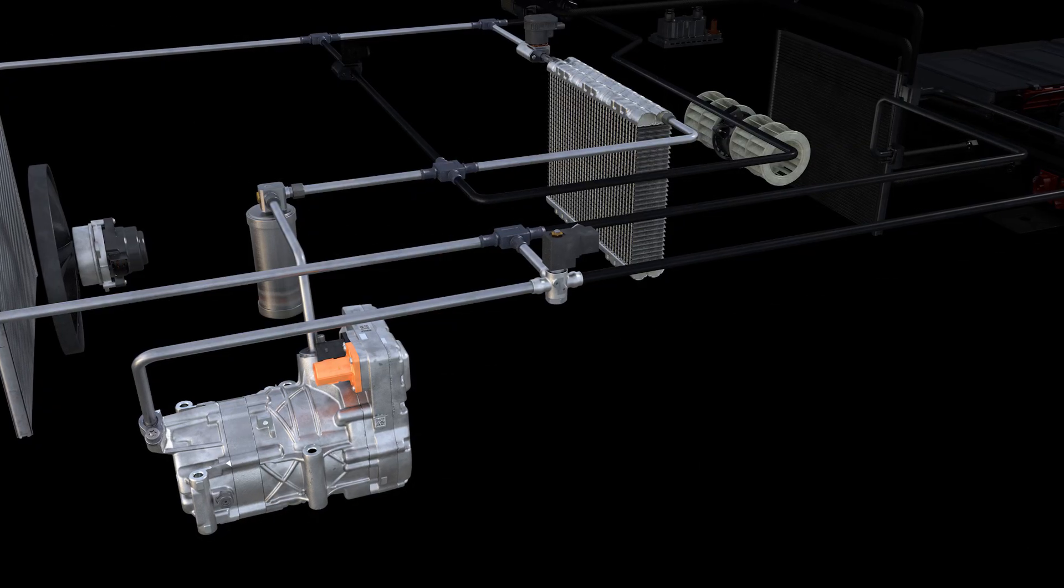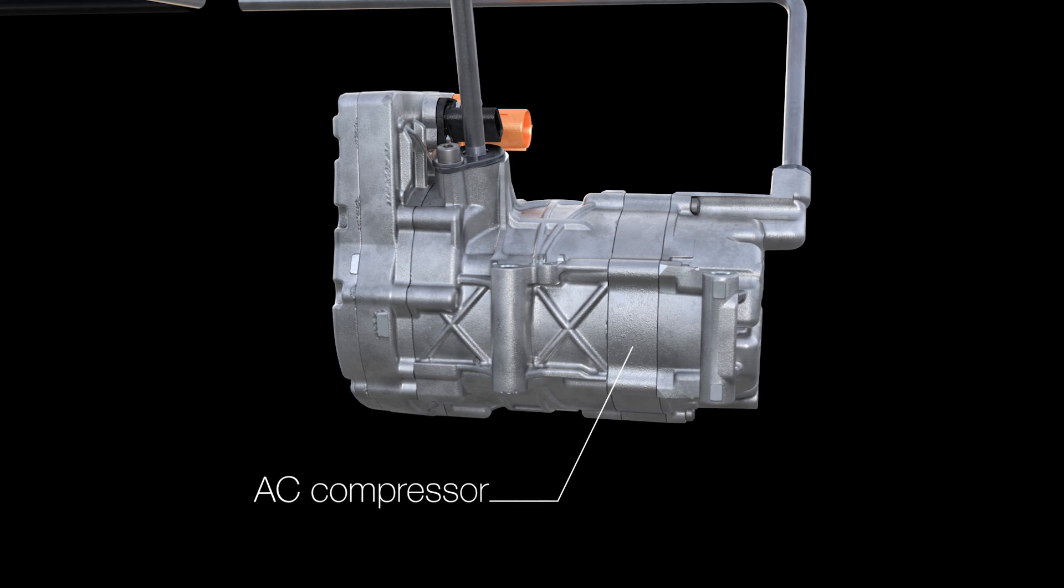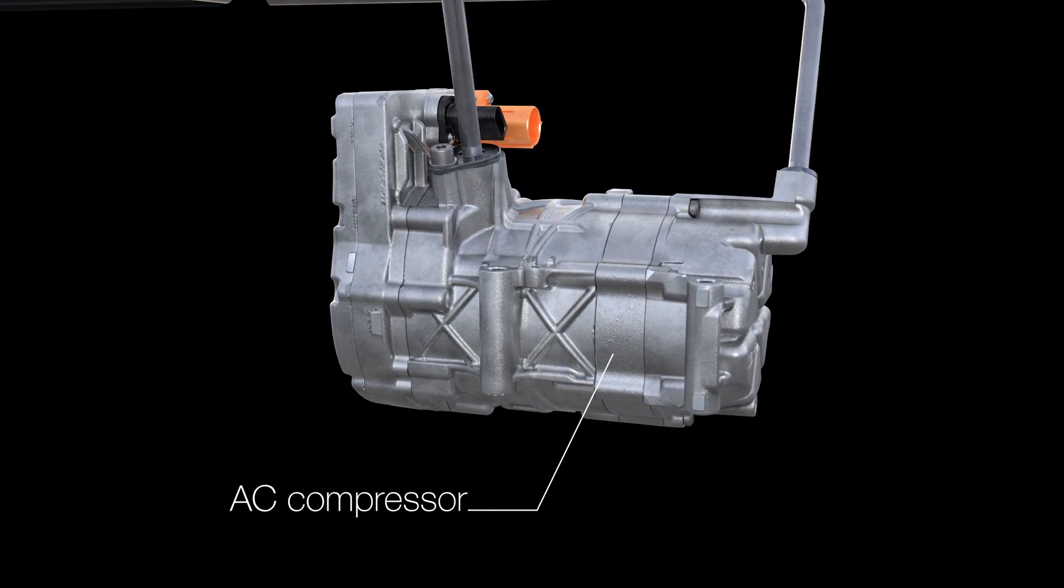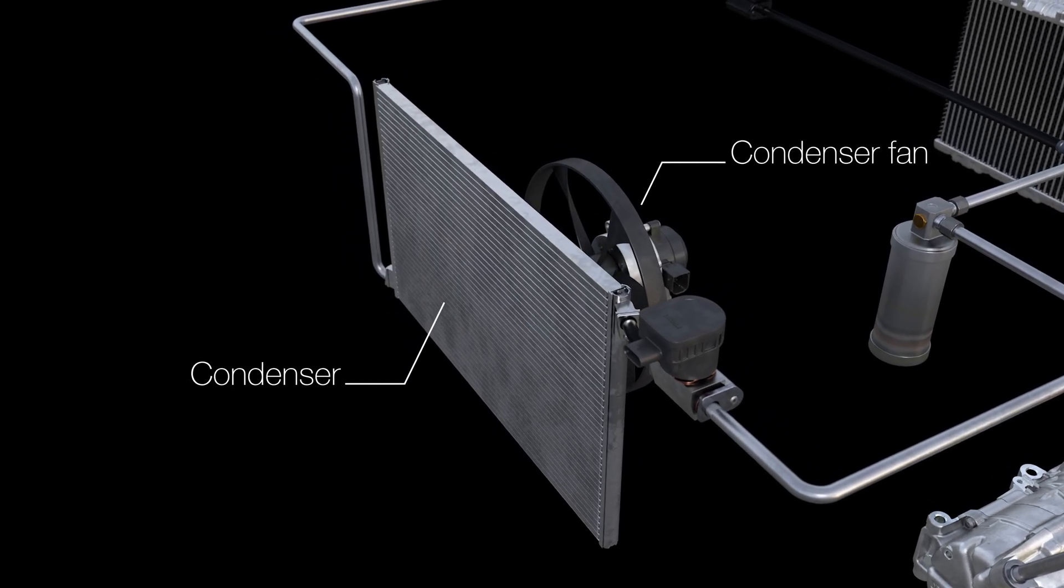The air conditioning compressor is at the heart of the system. It compresses the refrigerant and pumps it through the entire circuit. The condenser and fan are located at the front of the vehicle.